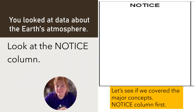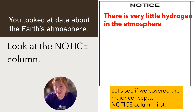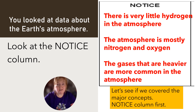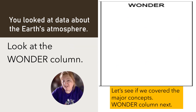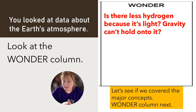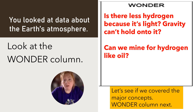So you looked at some data. In the notice column: I noticed that there is very little hydrogen in the atmosphere. The atmosphere is mostly nitrogen and oxygen. And the gases that are heavier seem to be more common in the atmosphere — the lighter ones are less common. Now let's write some information in the wonder column. Is there less hydrogen because it's light? It doesn't have a lot of mass, so maybe gravity can't hold on to it — that's why there's less of the light things. Can we mine for hydrogen, like we can mine for oil and gold and other minerals?